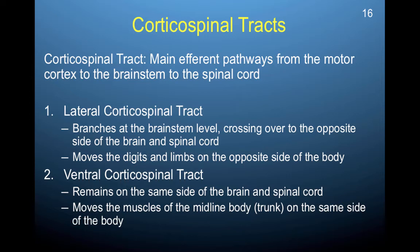The lateral corticospinal tract branches at the brainstem level, crossing over to the opposite side of the brain and spinal cord. It moves the digits and limbs on the opposite side of the body, because our brain is organized contralaterally. The ventral corticospinal tract remains on the same side of the brain and spinal cord. It moves the muscles of the midline body — the trunk — on the same side of the body. So our arms are controlled by the opposite hemisphere, but our trunk muscles involved in bending and leaning are controlled by the same side.